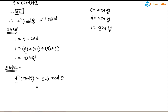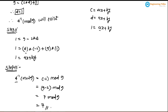We write minus 2, then attach mod 9, giving us −2 mod 9. Since the magnitude 2 is less than 9, we compute 9 − 2 = 7, so the result is 7 mod 9 = 7. Therefore, 4 inverse mod 9 equals 7. This is the final answer and we have solved problem number 1.